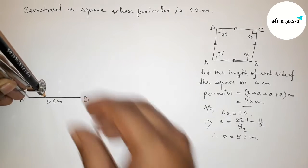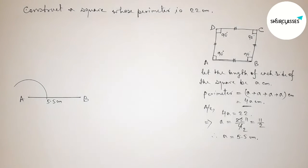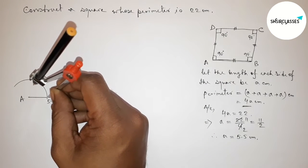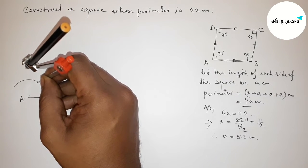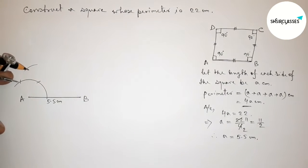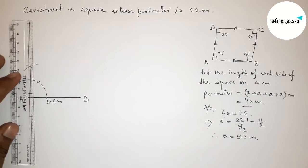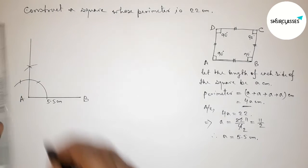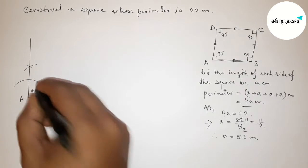Next, we draw a 90-degree angle at point A. Place the compass on point A, take any length, and draw an arc. With the same length, step along the arc to cut further points, then draw another arc. Join the line through these points to get a 90-degree angle at A.